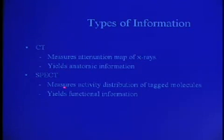On the other hand, SPECT basically measures activity distribution of molecules tagged by radioisotopes. You are measuring the distribution of the radioisotopes. Because those molecules can be designed to target specific physiological processes, SPECT actually yields functional information.